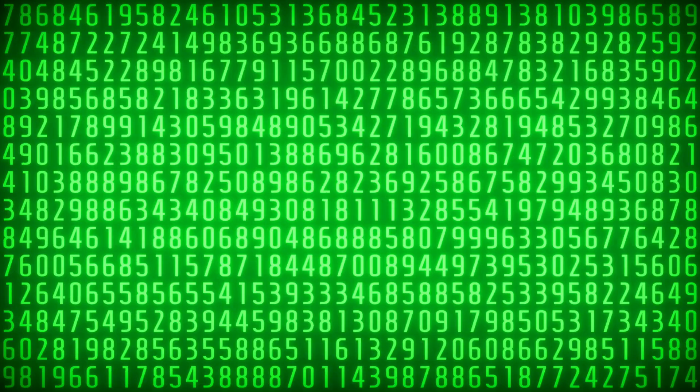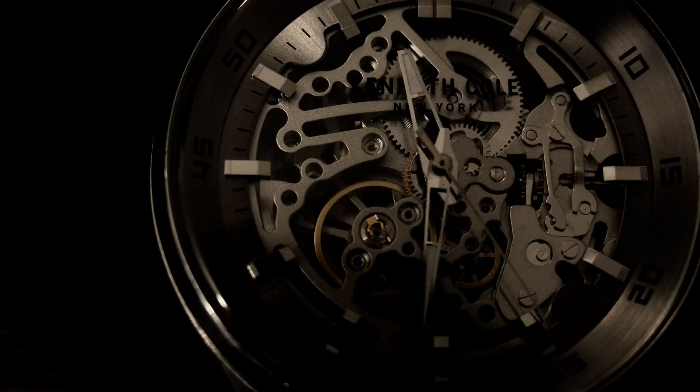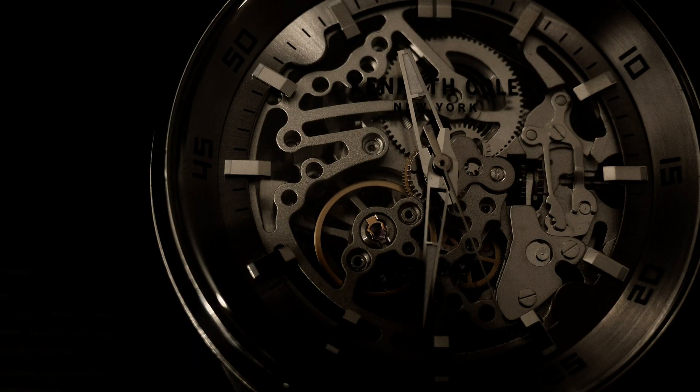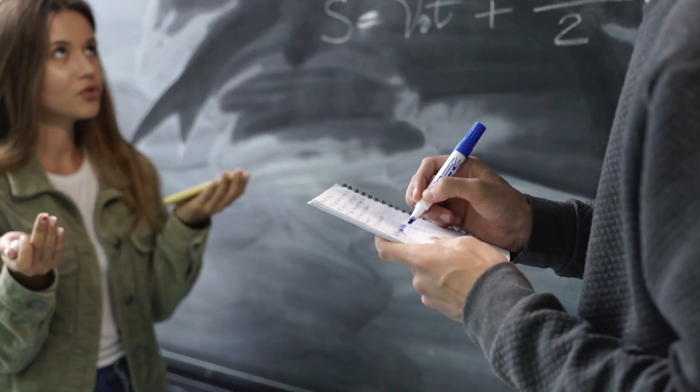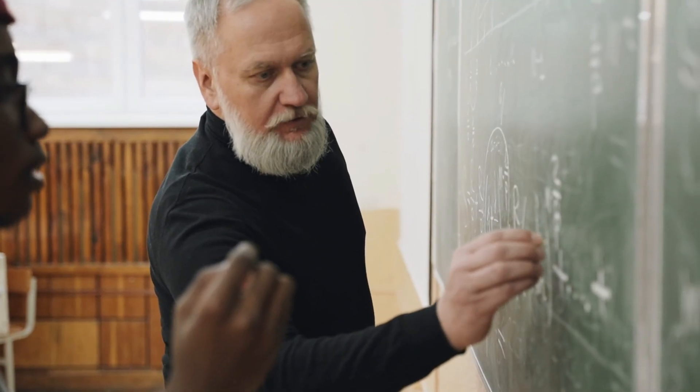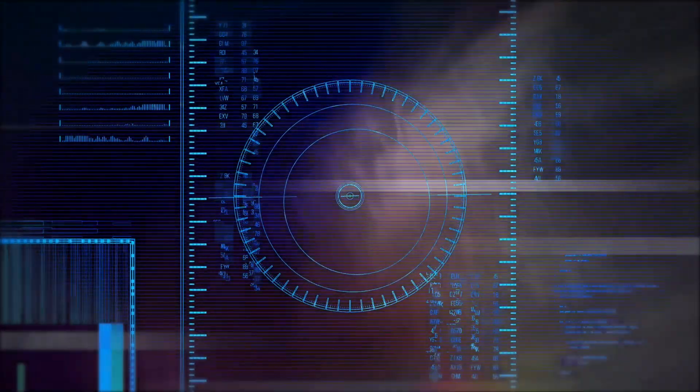Now, prime numbers aren't just any random numbers, they're basically the building blocks of math. We use them in everything from cryptography to exploring some of the deepest patterns in mathematics. But here's the big mystery. Can we actually find a formula or system that guarantees all prime numbers?